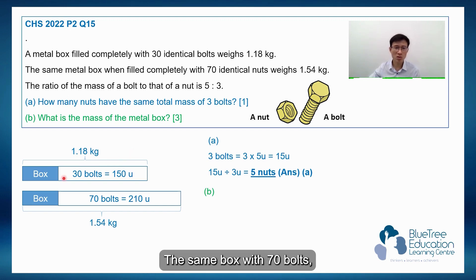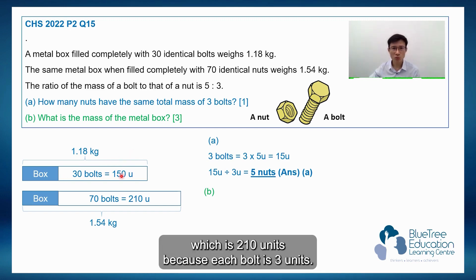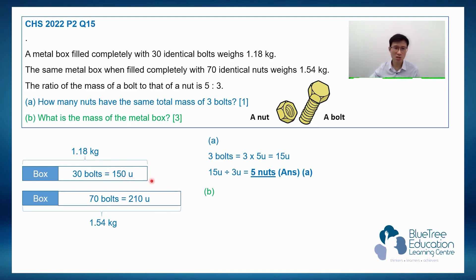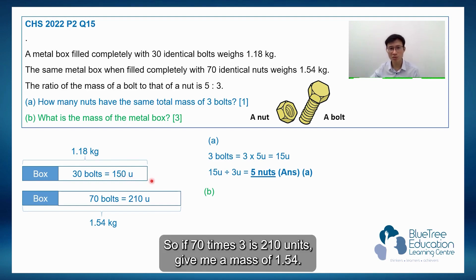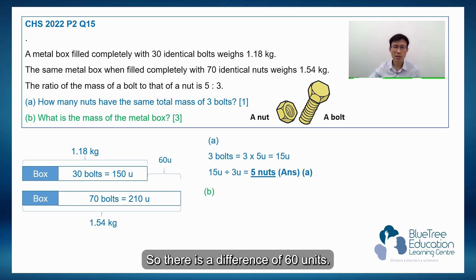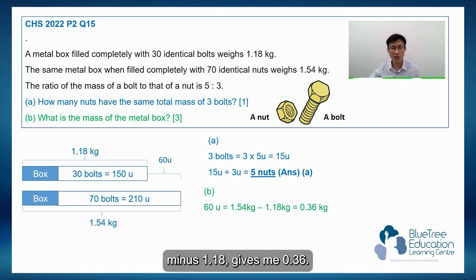And the same box with 70 nuts, which is 210 units because each nut is 3 units. So 70 times 3 is 210 units gives me a mass of 1.54. So there is a difference of 60 units. So I know 60 units must be 1.54 minus 1.18, which gives me 0.36.